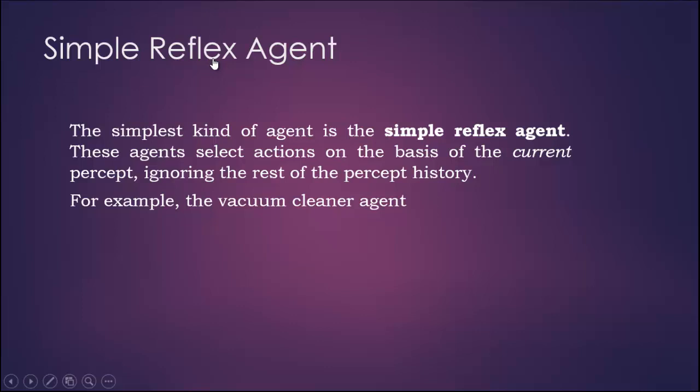The simplest kind of agent is the Simple Reflex Agent. These agents select actions on the basis of the current percept, ignoring the rest of the percept history. For example, the Vacuum Cleaner Agent.